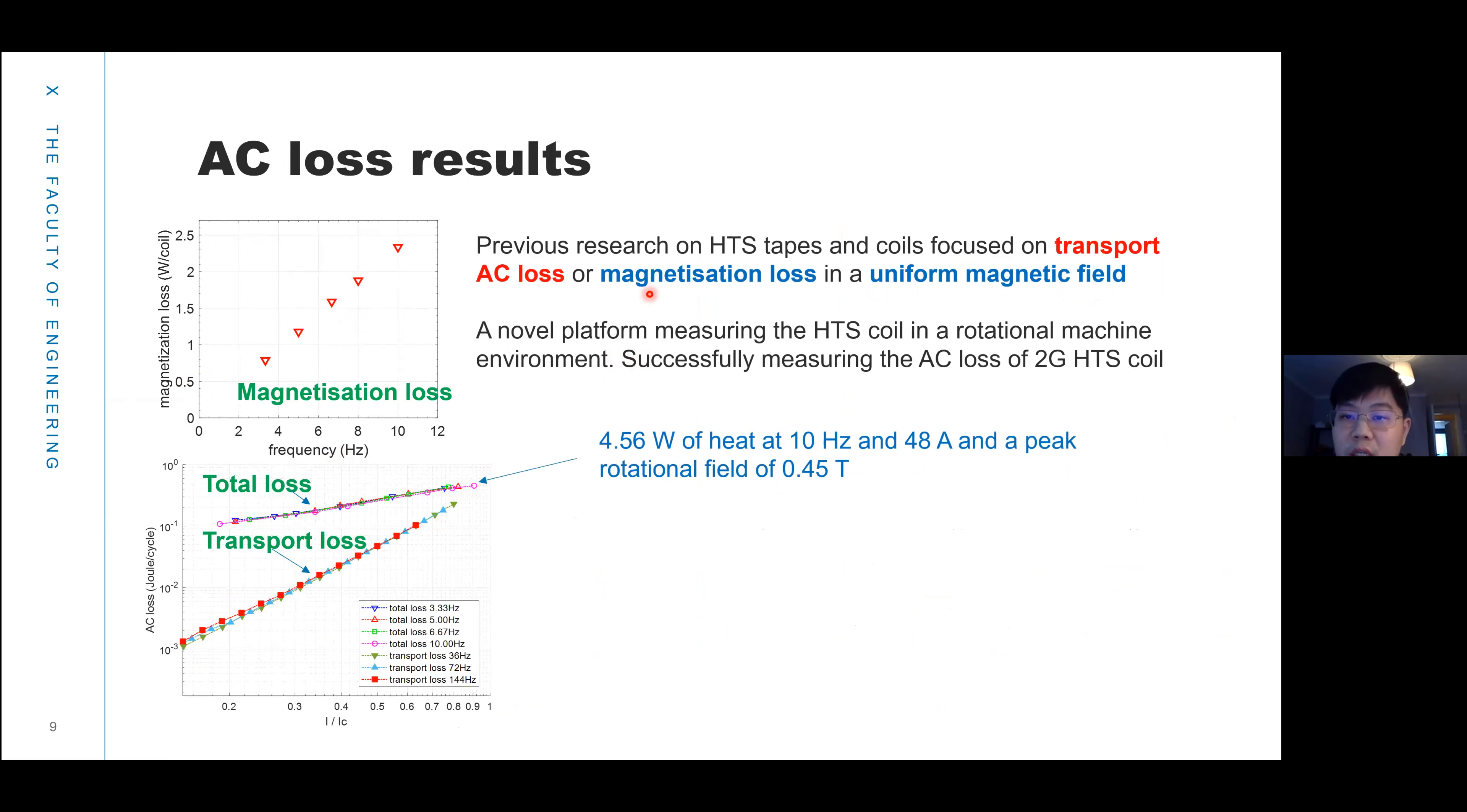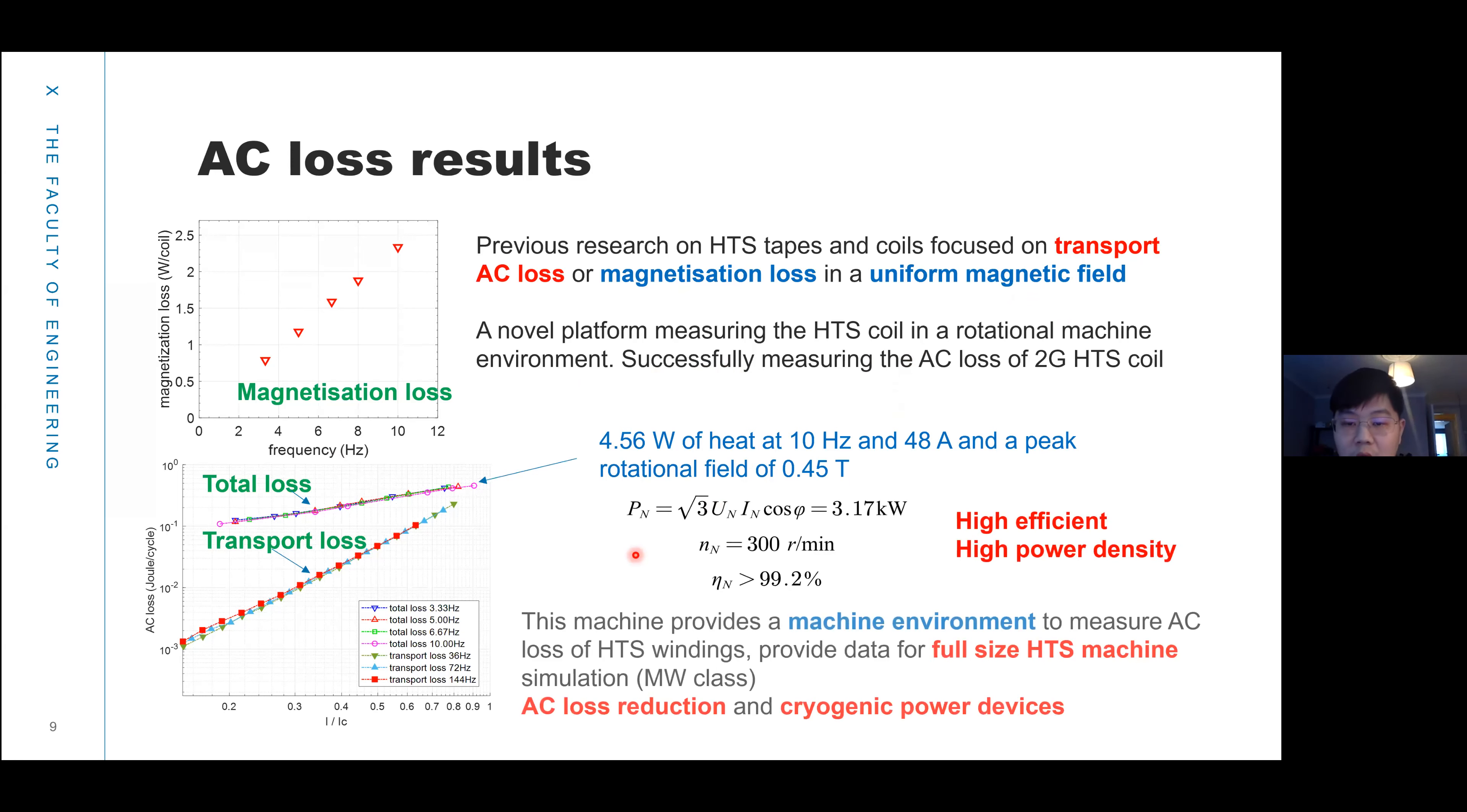Previous research on tape and coil focused on transport AC loss or magnetization loss in a uniform magnetic field. Now we applied a rotational magnetic field to simulate a machine environment and study the AC loss performance in the machine environment. From our platform, we found at 148 amps transport current, the AC loss of this coil is 4.56 watts. We can calculate the efficiency of this machine is about 99 percent.